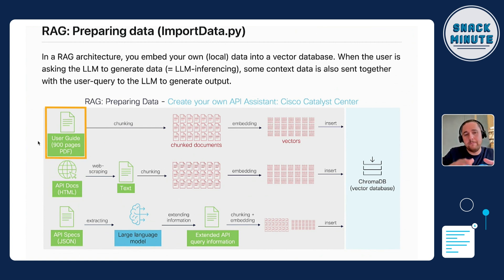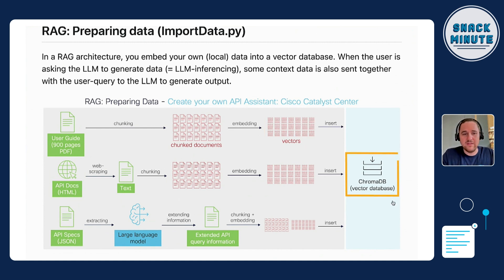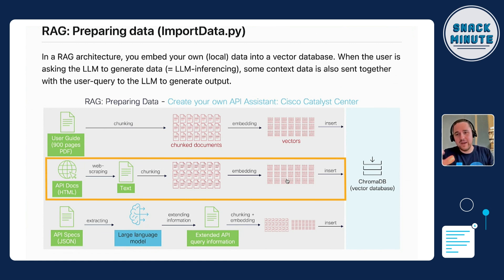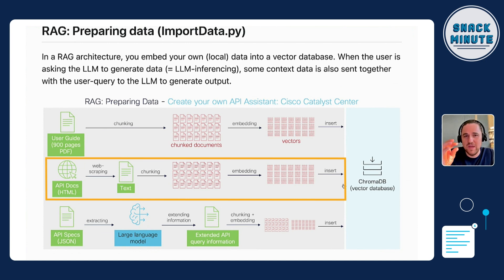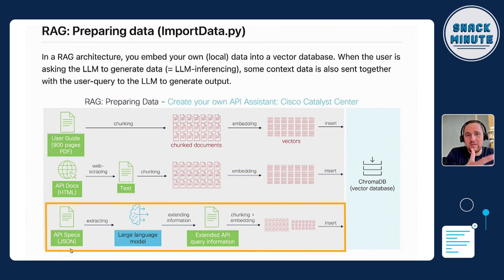Those pages are chunked — per page, for example — and then each page is embedded, which means vectorized, converted from characters into numbers, and then inserted into the ChromaDB. The same happens with the API documentation: it's web-scraped, chunked, and embedded the same way. The LLM doesn't understand characters as we see them, so we need to convert them into numbers. Then the LLM can check the semantic relationship to the data and predict what the next part of the sentence should be.